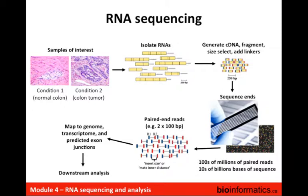These two reads correspond to the ends of the cDNA fragments we started with. This is the raw data we're going to be starting with — files that contain millions and millions of lines, each one representing either read 1 or read 2 of a paired-end read. We're going to take those reads and map them to a combination of the genome, the transcriptome, and exon junctions, and then do downstream analysis on those mapped reads.